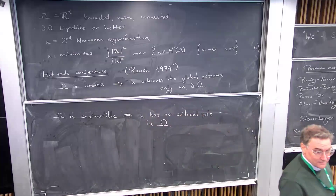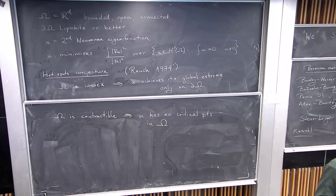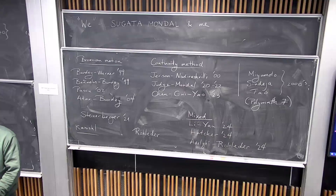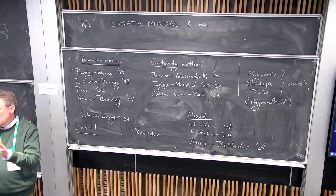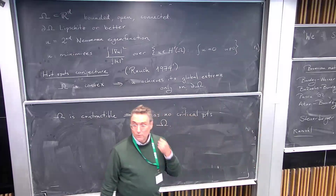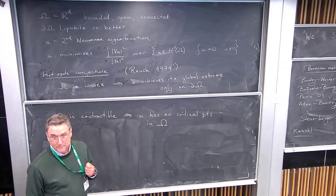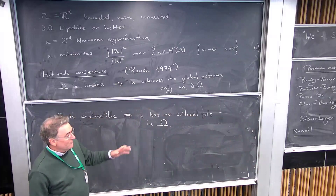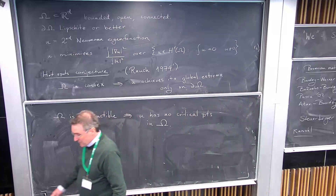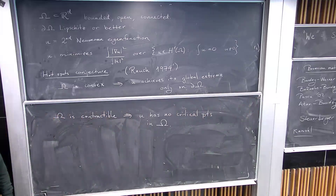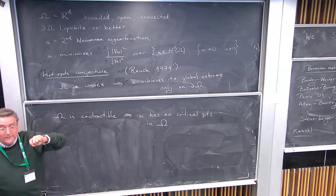Numerically, this is a very low energy state — the second eigenvalue — so computers can very quickly find the eigenfunction. You can draw all kinds of crazy domains, convex or not, and you always see the phenomenon: no interior critical points. People have also done rigorous numerics, but you can just use PDE Toolbox or similar software.